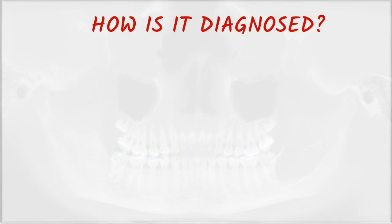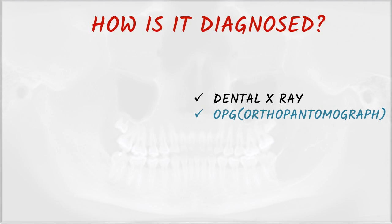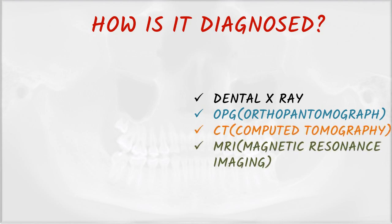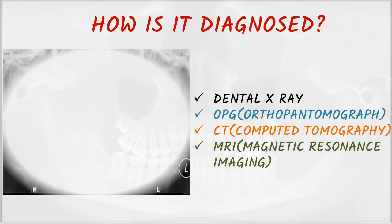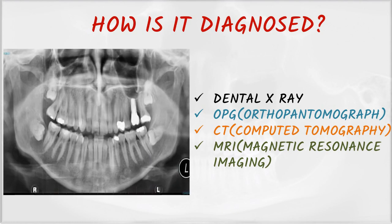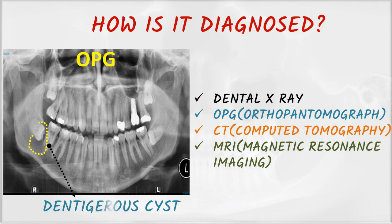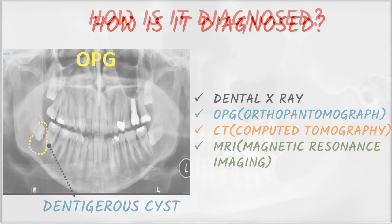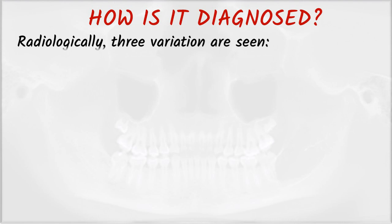How is the dentigerous cyst diagnosed? It is diagnosed by dental X-ray, OPG, CT (computed tomography), and MRI. Look at the figure — this is an OPG and the yellow dotted line represents the dentigerous cyst. You have all these options to diagnose it, but confirmation is on the basis of cystic content.